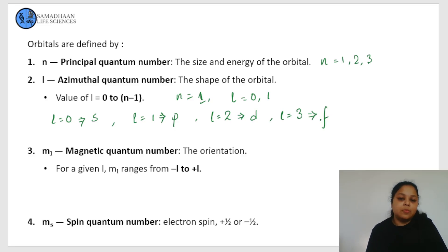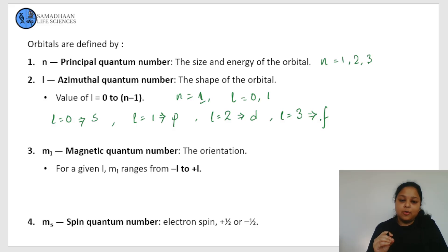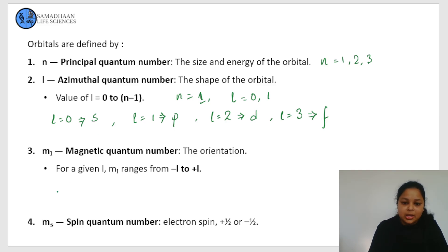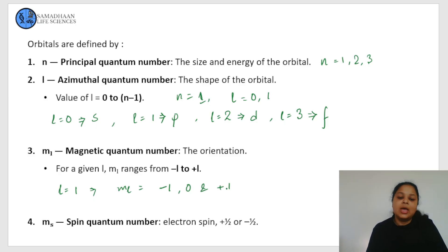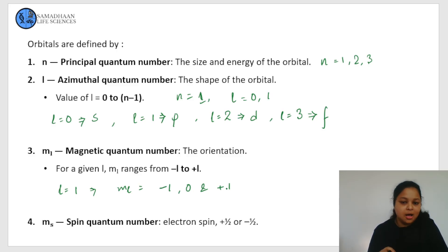Our next quantum number is the magnetic quantum number, which tells us about the orientation of the orbital. For a given l, we have ml values ranging from minus l to plus l. For example, if l equals 1, then ml can be minus 1, 0, and plus 1. The last quantum number is the spin quantum number, which can have a value of plus half or minus half depending on the electron spin.